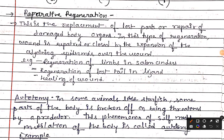The next type is reparative regeneration. Reparative regeneration is the replacement of the lost parts or repair of damaged body organs. In this type of regeneration, the wound is repaired or closed by the expansion of the adjoining epidermis over the wound. Examples include regeneration of the limb in salamander, regeneration of the lost tail in the lizard, and healing of wounds.